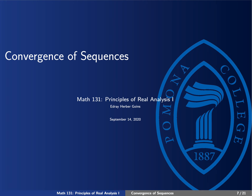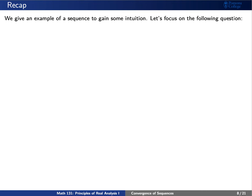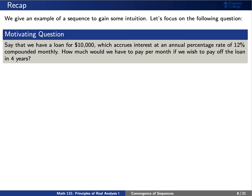We introduce the concept of convergence of sequences. Let's recap some ideas from before and focus on the following motivating question. Say that we have a home loan for $10,000 which accrues at an annual percentage rate of 12% compounded monthly. How much will we have to pay per month if we wish to pay out the loan in four years?